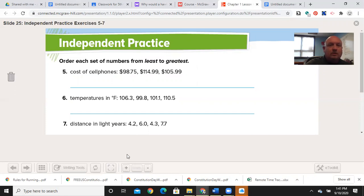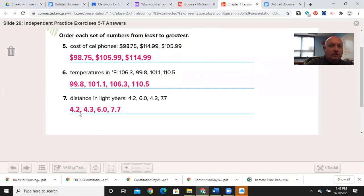Welcome back. Let's see how you did. Cost of cell phones: 98, 105, 114. Good. 99, 101, 106, 110. Good. 4.2, 4.3, 6, 7.7. Good. So if your answers meet these, then you've done well.